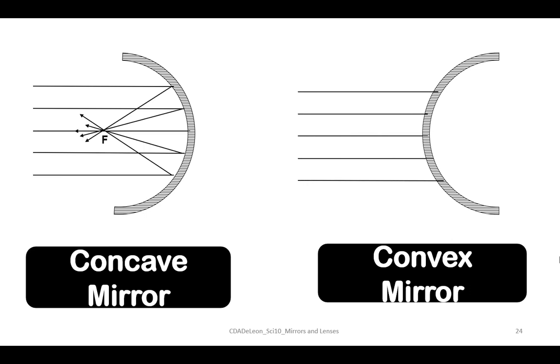While convex mirror is a curved mirror for which the reflective surface bulges out towards the light source. Convex mirrors reflect light outwards or diverging light rays and therefore they are not used to focus light. The image is virtual, erect, and smaller in size than the object but gets larger up to the size of the object as the object comes forward to the mirror.